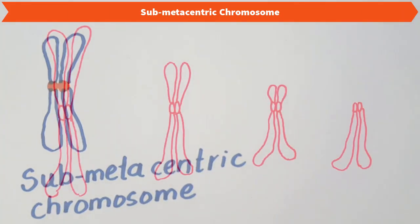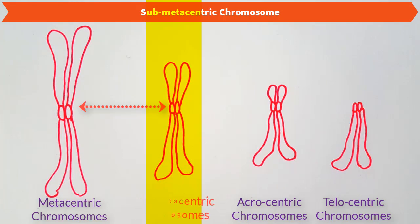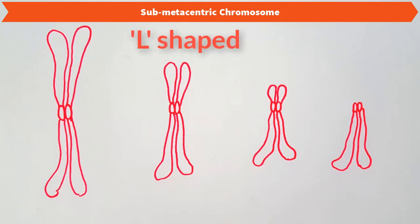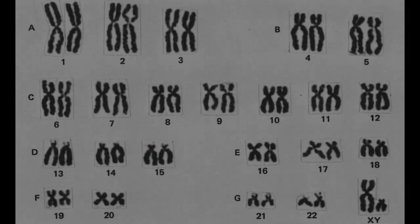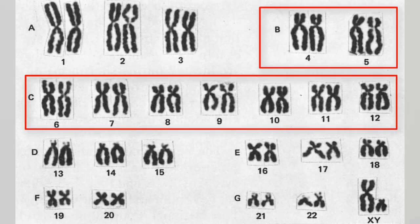Submetacentric chromosomes. In submetacentric chromosomes, the centromere is slightly away from the midpoint. Submetacentric chromosomes appear L-shaped. Human chromosomes from 4 to 12 are submetacentric chromosomes.